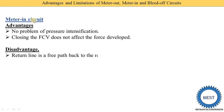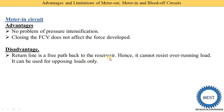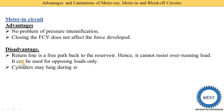Disadvantages of the meter in circuit: The return line is a free path back to the reservoir, meaning there is no flow control valve provided on the return line. Hence it cannot resist overrunning load — it can be used for opposing load only. In a meter out circuit, it could be used for both loads, but the meter in circuit is only used for opposing load. This is the disadvantage of the meter in circuit.